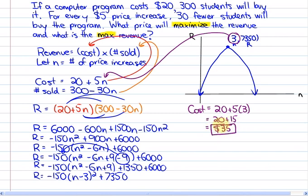And in answer to the second part of the question, what is the maximum revenue? That's right here, $7,350. So the maximum revenue would be, from the vertex, $7,350.